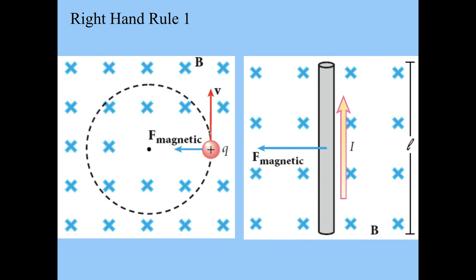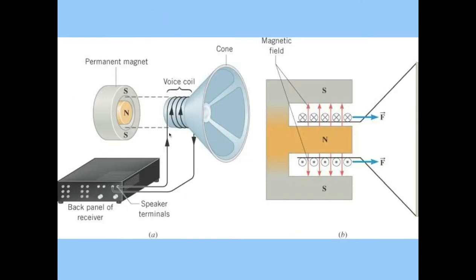So as the charge starts to move through the field, it will be deflected and travel in a circular pattern. There's great applications for this. So if you run electricity through here, and there's a magnet in here and a speaker, the speaker vibrates back and forth, thus producing the sound.